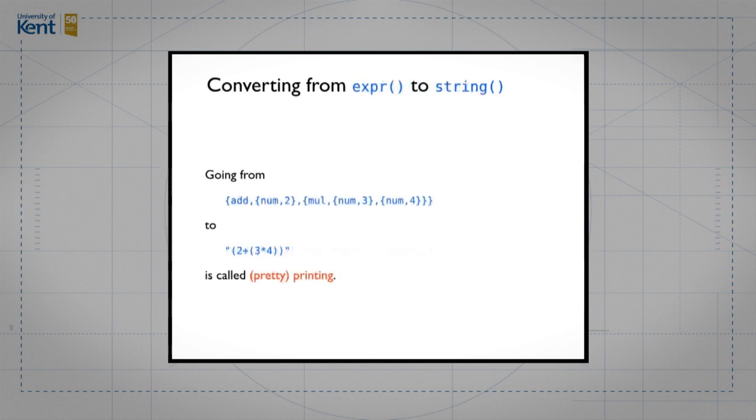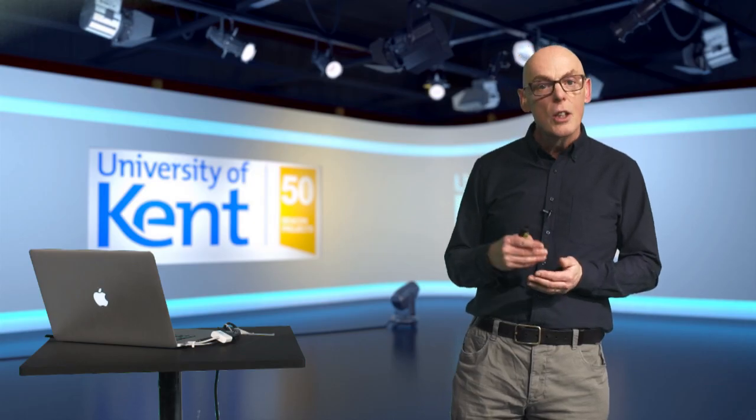We also might want to go in the other direction. We might want to go from a structure, this string that's a tree, to a printed version that's perhaps easier to read, but doesn't have the structure there. We call that printing or pretty printing.